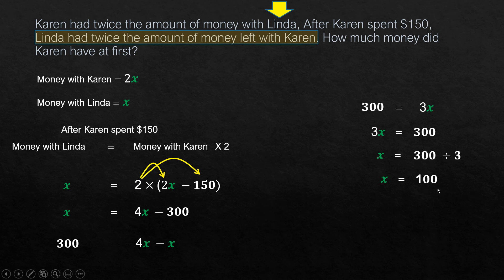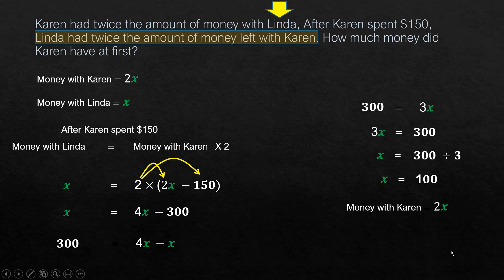So x is 100 and we know money with Linda is x, which is $100. But the question is about how much money Karen had at first. Money with Karen was 2x — 2 times 100 — which is $200.